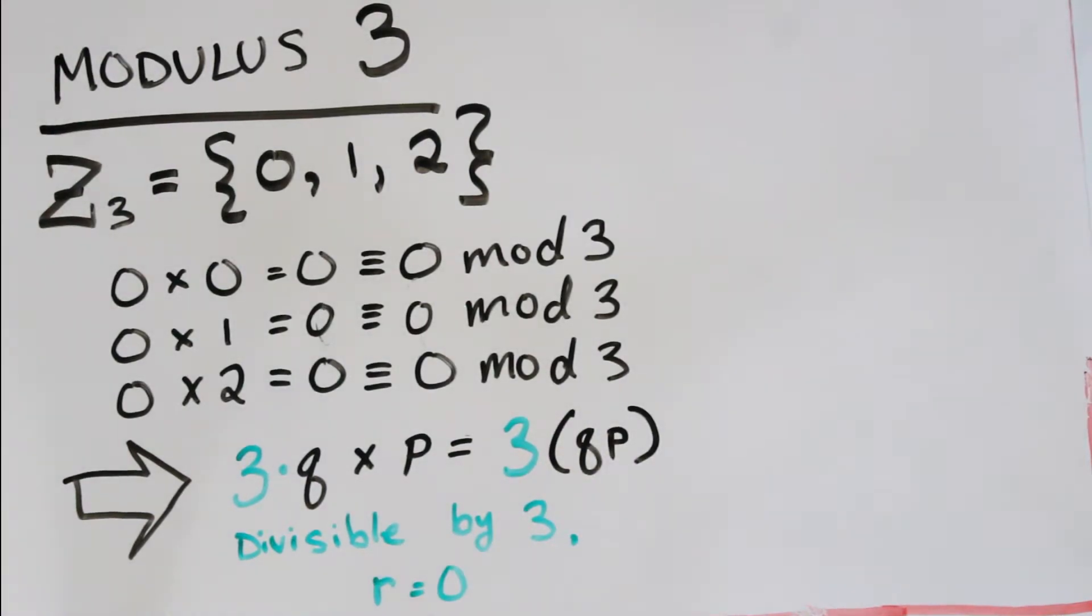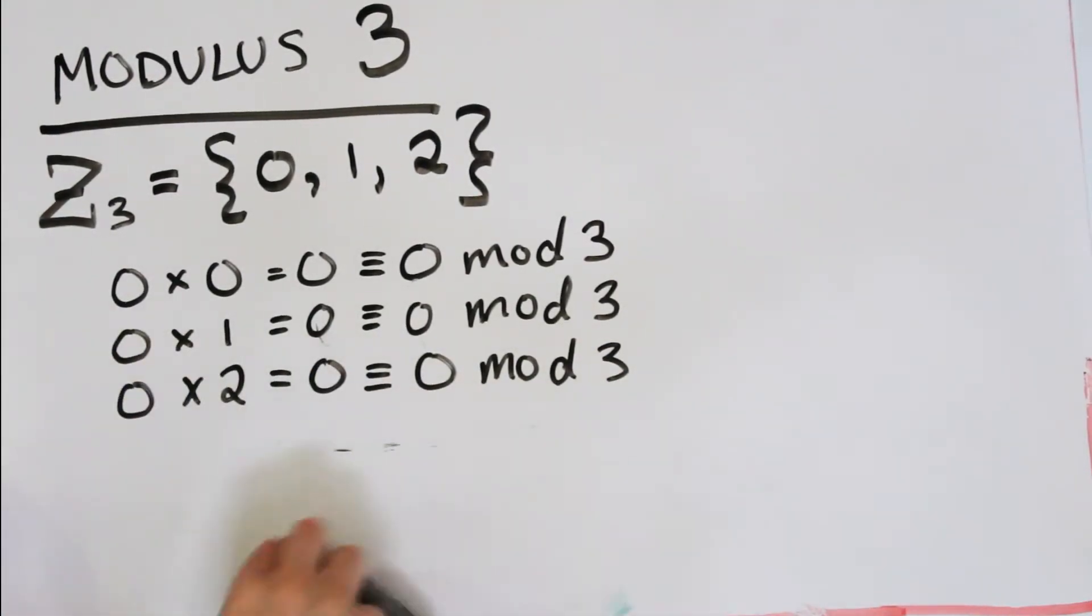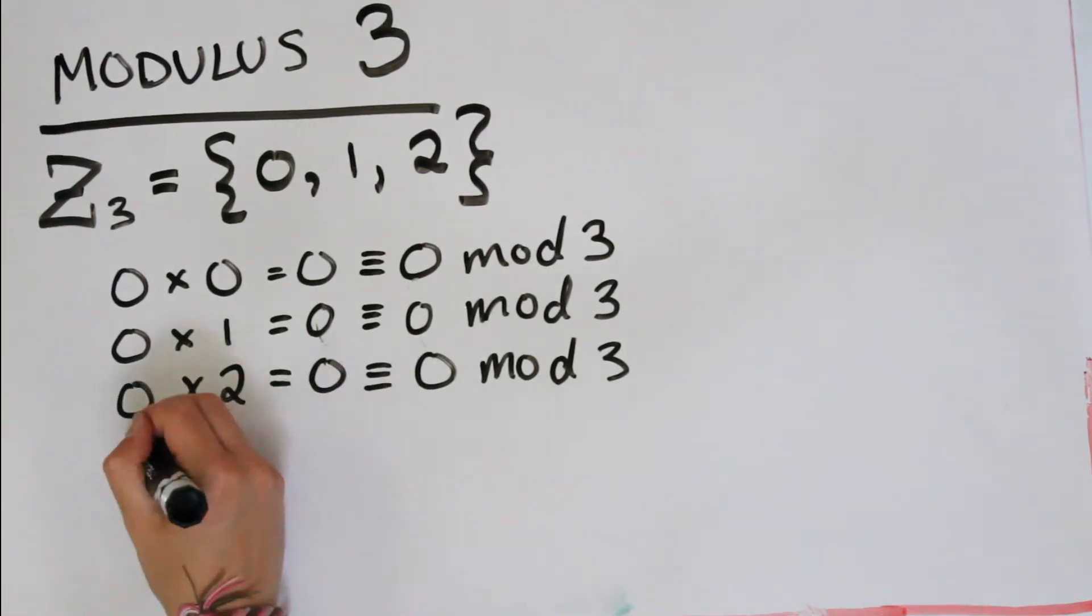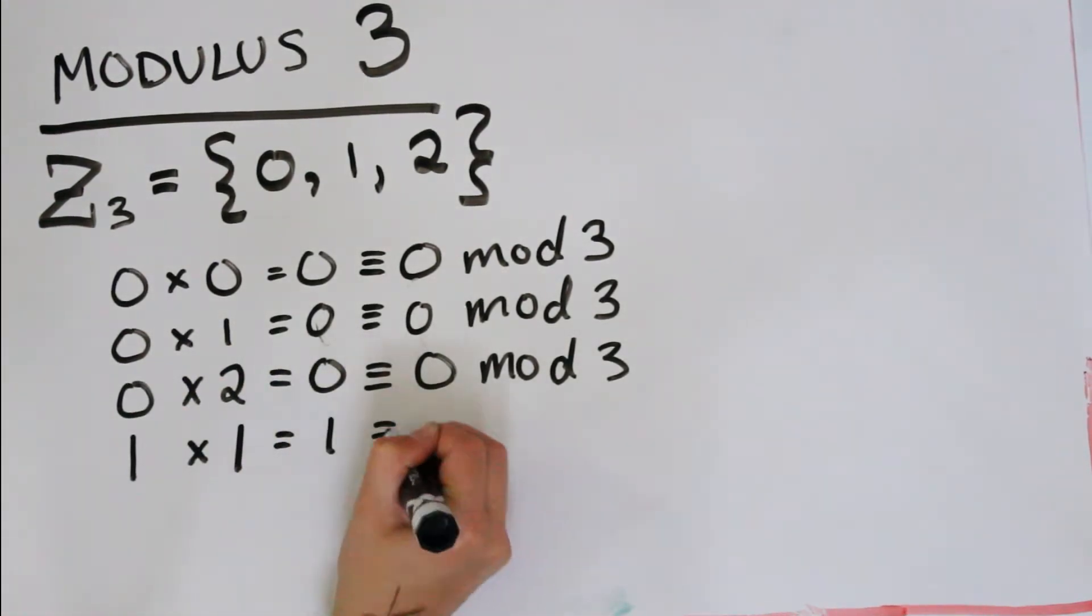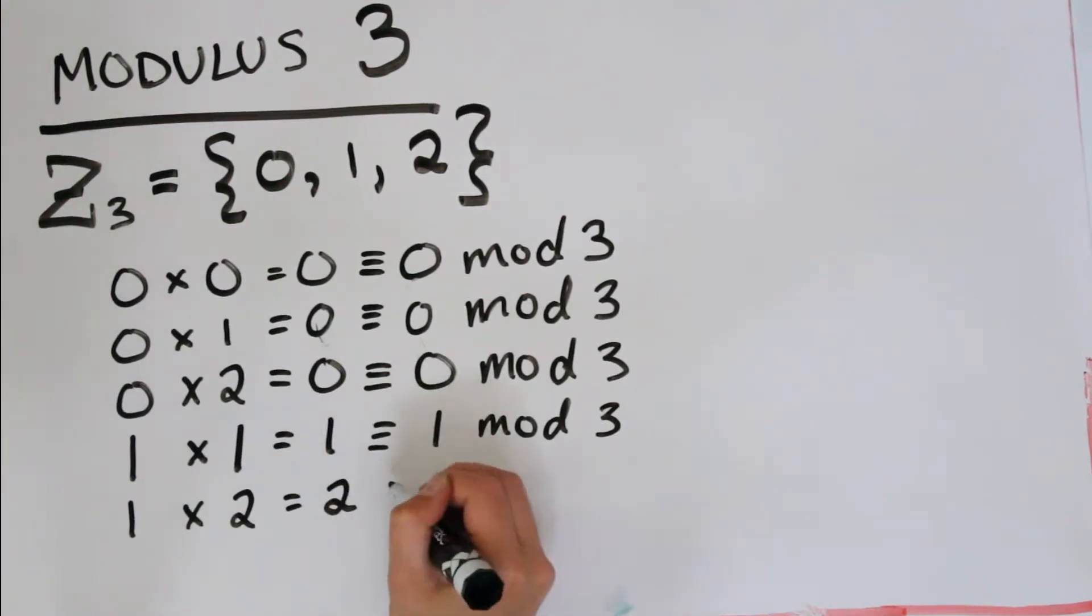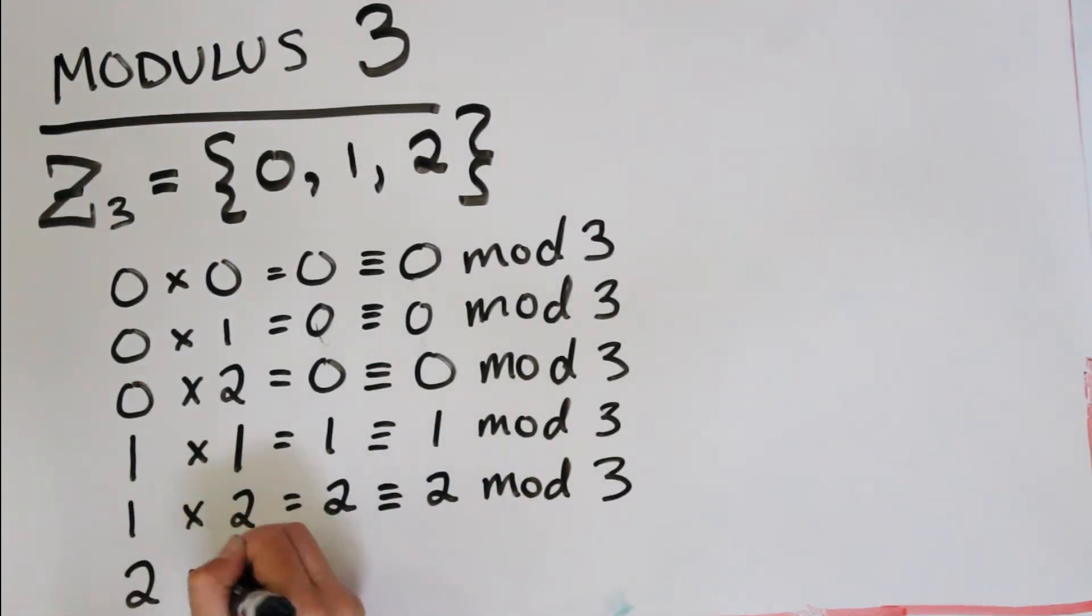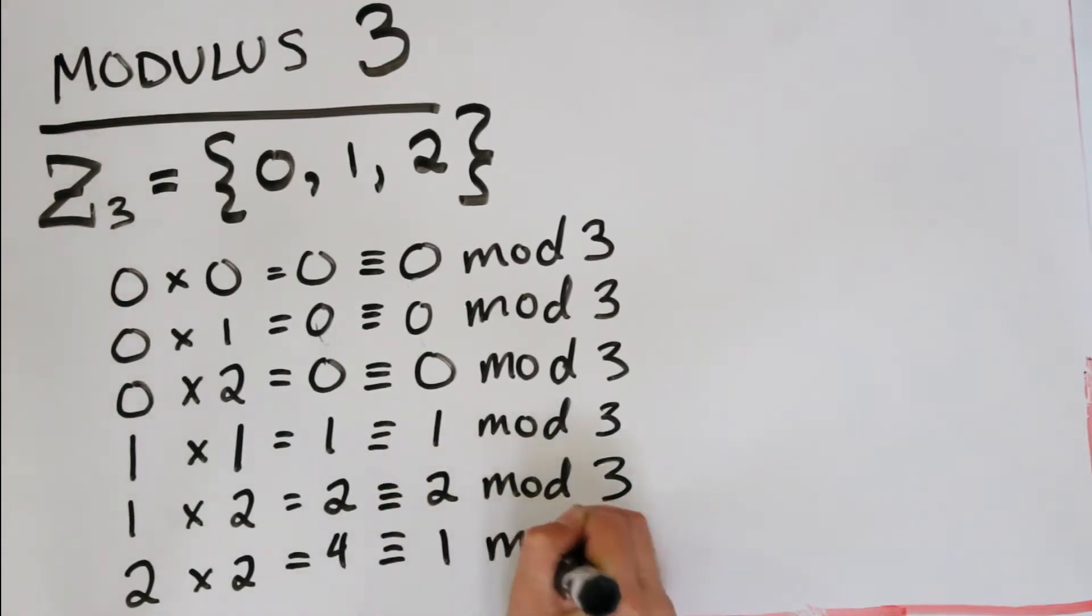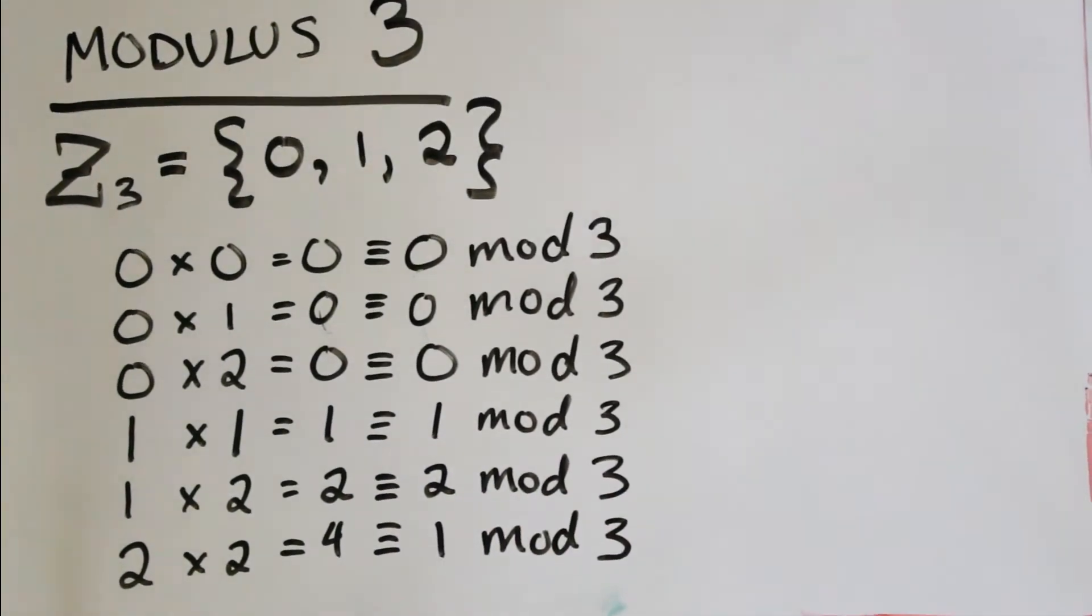In the same way, we can figure out what happens when we don't have 0 in our multiplication. So we can figure out 1 times 1 is congruent to 1 mod 3, 1 times 2 is congruent to 2 mod 3, and then 2 times 2 is actually congruent to 1 mod 3, because 4 is congruent to 1.